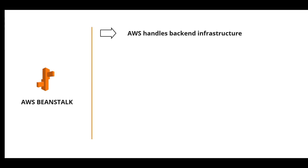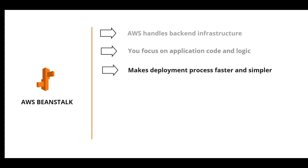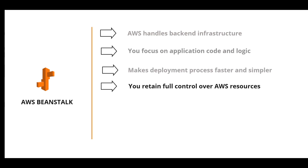AWS Elastic Beanstalk provides developers and system administrators an easy and fast way to deploy and manage applications without having to worry about the infrastructure. We are theoretically running all our compute services on EC2, but this provisioning and handling is done by AWS, so you can just focus on your code and business logic. You can solely focus on the application code, making the deployment process faster and simpler. At the same time, you regain full control over the AWS resources powering your application and can access these underlying resources anytime.